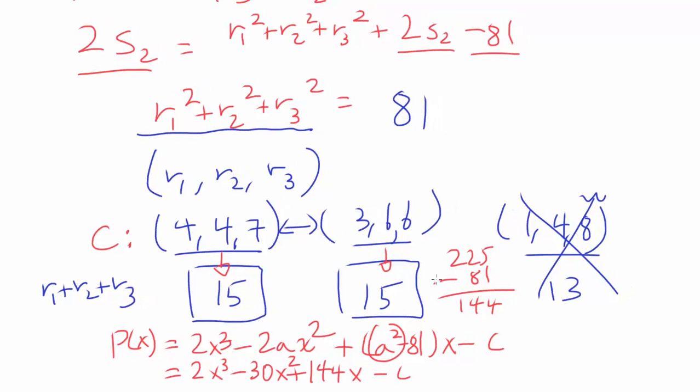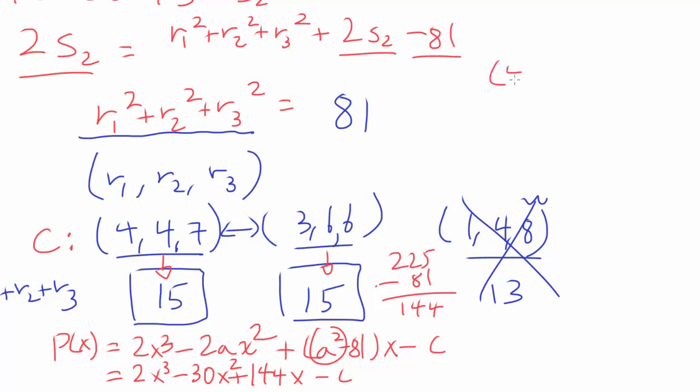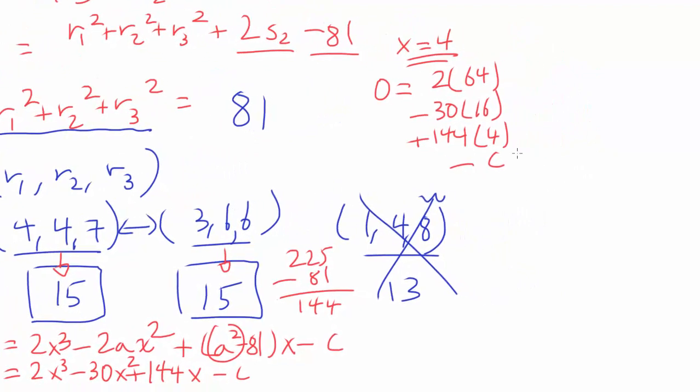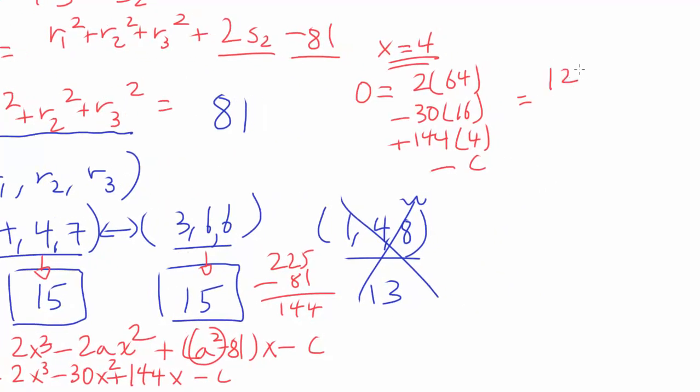Let's start with 4, 4, 7. All we have to do is plug in 4 for x. So let's try x = 4, and that gets us P(4), which should be 0 because 4 is a zero. Should be 2 times 64 minus 30 times 16 plus 144 times 4 minus c. We can try to solve this, and this is the same as 128 minus 480 plus 576 minus c. 576 minus 480 is going to get us 96, adding it to 128 gets us 224.